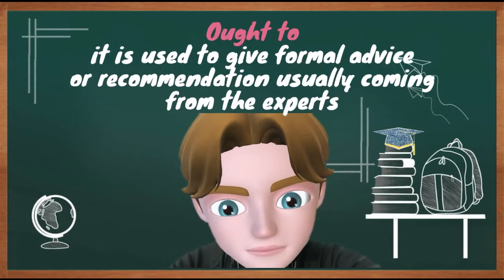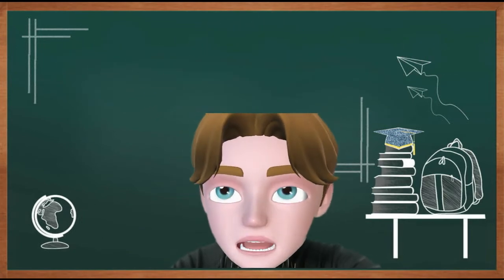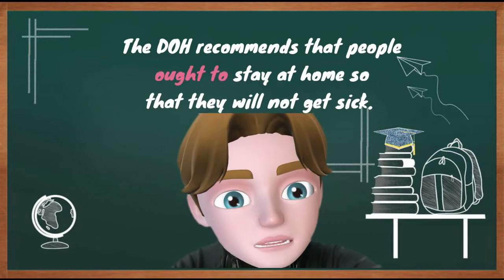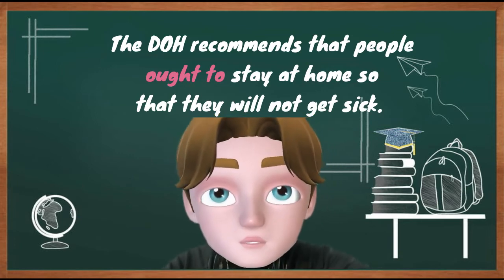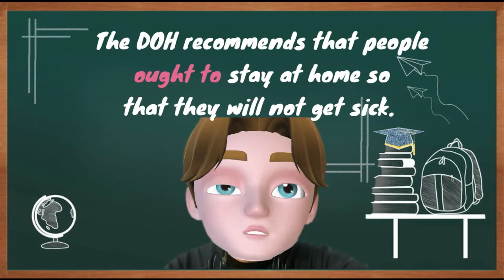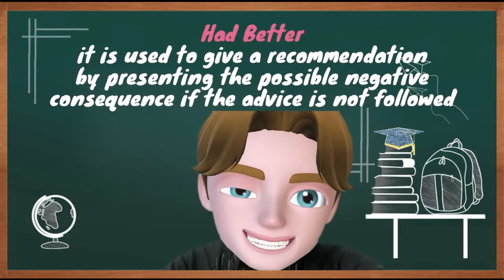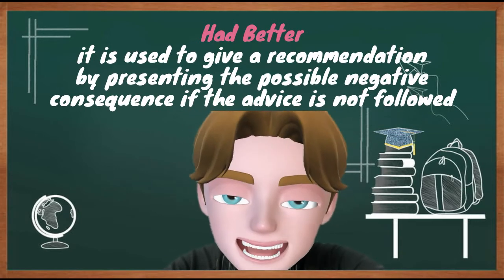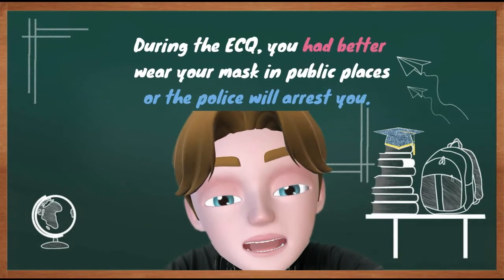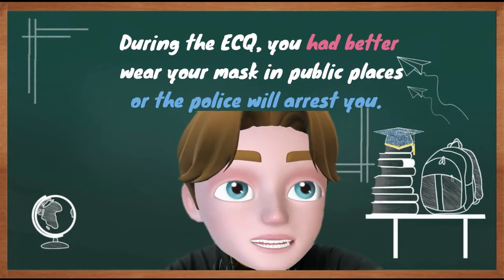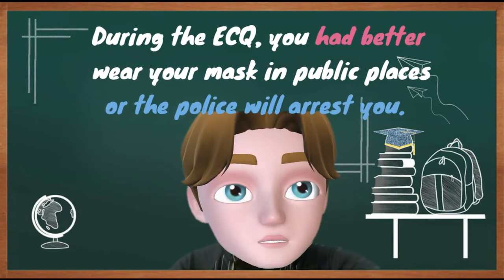Number three, 'ought to': it is used to give formal advice or recommendation, usually coming from experts. Example: The DOH recommends that people ought to stay at home so they will not get sick. In this sentence, 'ought to' is used to deliver a formal suggestion, which is to stay at home. Number four, 'had better': had better is used to give a recommendation by presenting a possible negative consequence if the advice is not followed. Example: During ECQ, you had better wear your mask in public places or the police will arrest you. 'Had better' introduces a possible negative consequence if the recommendation is not followed.